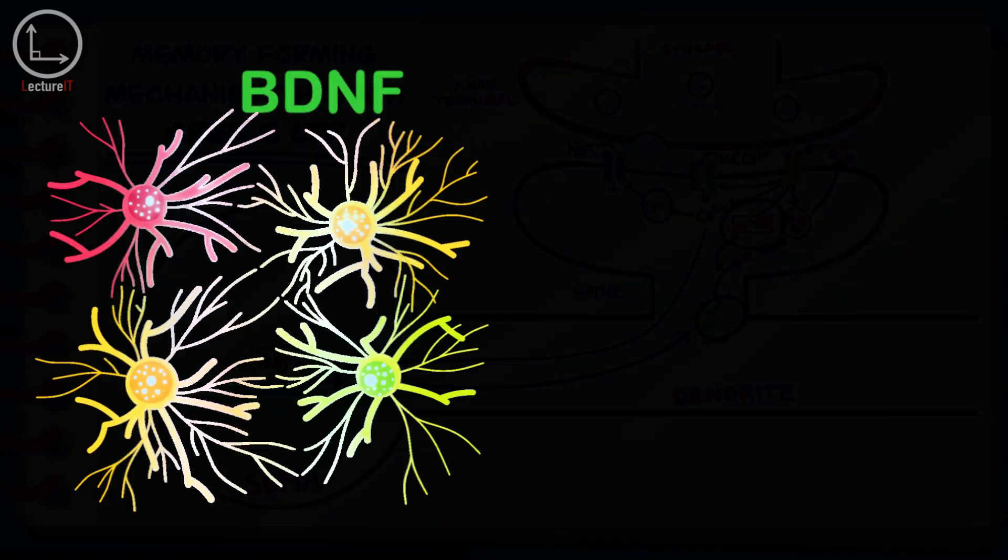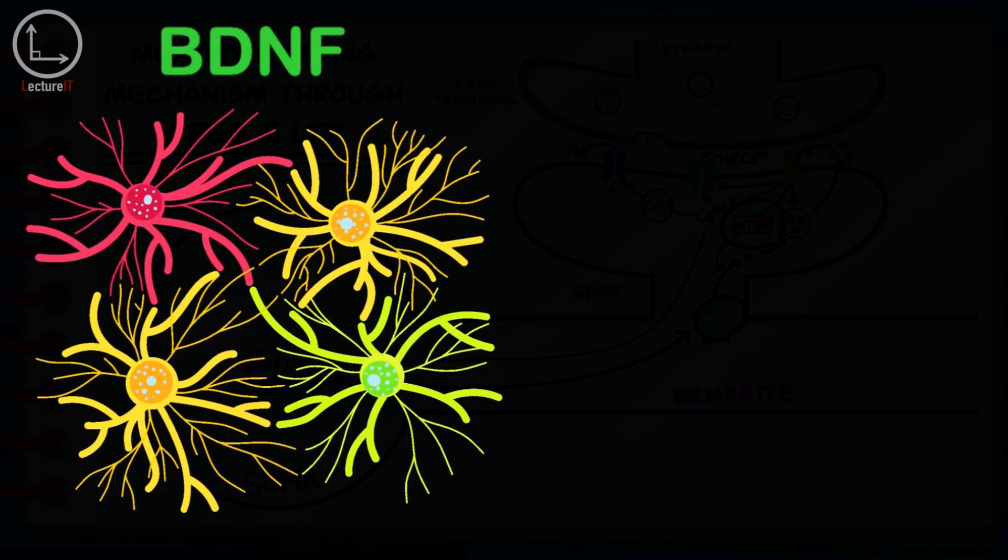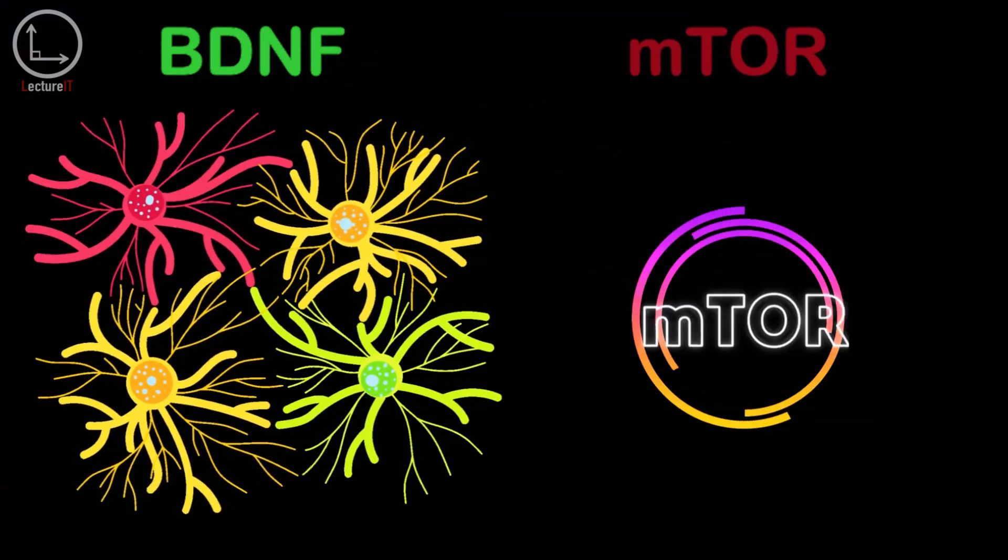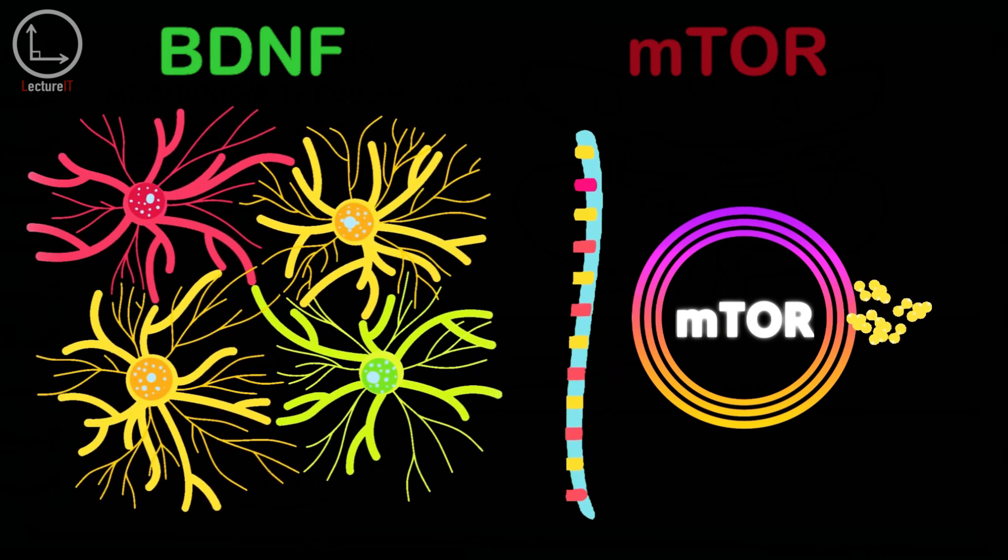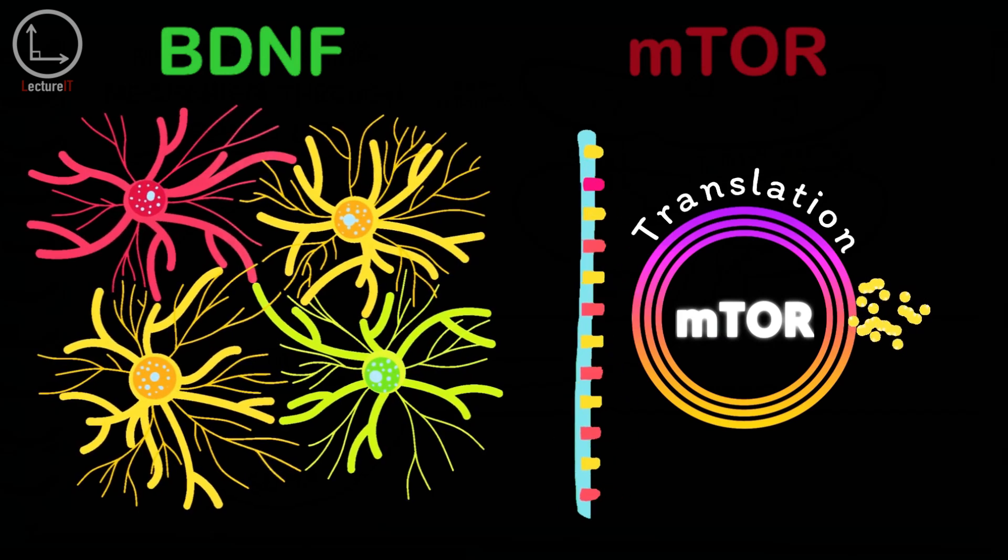BDNF supports the survival and growth of neurons and synapses, further facilitating the consolidation of memories. The mTOR pathway, which regulates cell growth and protein synthesis, plays a critical role in controlling the translation of proteins necessary for long-term memory storage.